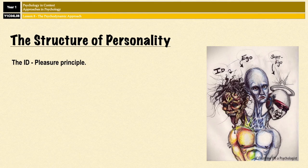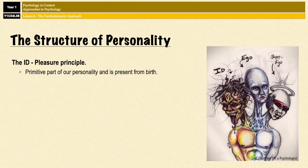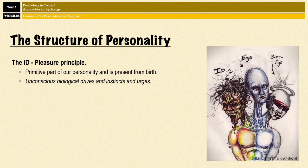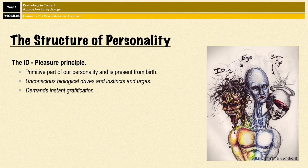The id is the primitive part of our personality. It's present from birth, and it's described as a mass of unconscious drives and instincts and urges. It operates on what's known as the pleasure principle — it wants what it wants when it wants it, and it's completely selfish and demands instant gratification of its needs. Imagine a baby screaming at you because it wants something. You can't reason with it or tell it to be quiet. You just have to satisfy what it wants and then it quiets down again. That's effectively what the id is.